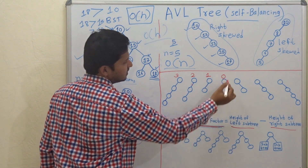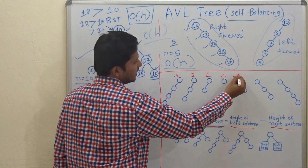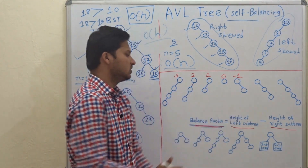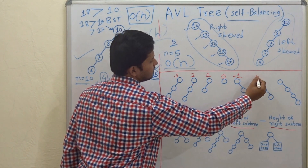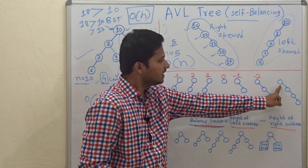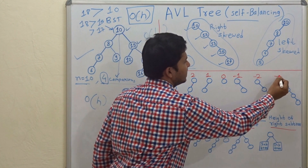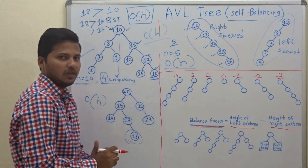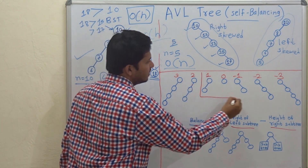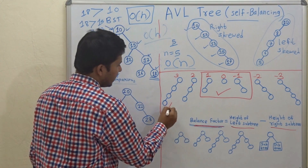For a right-skewed node: 0 minus 1 is -1, then 0 minus 2 is -2, then 0 minus 3 is -3. Now, out of all these trees, only three are balanced — all other trees are not balanced.